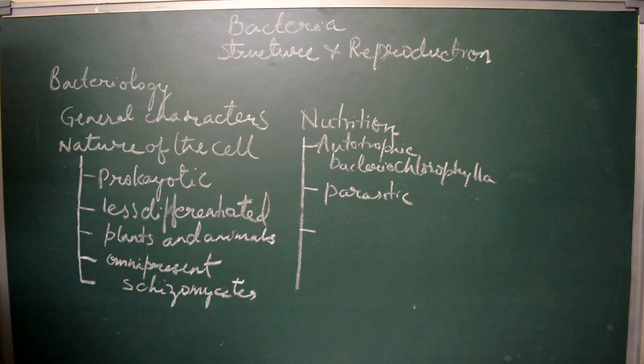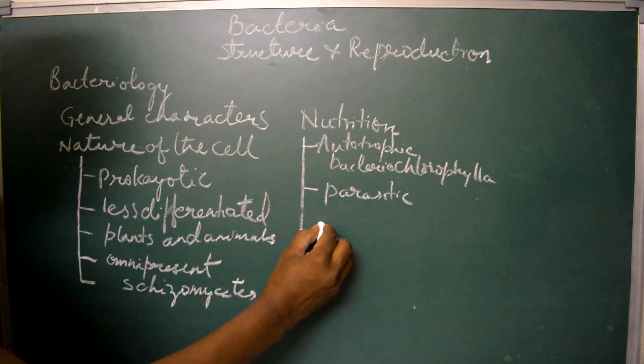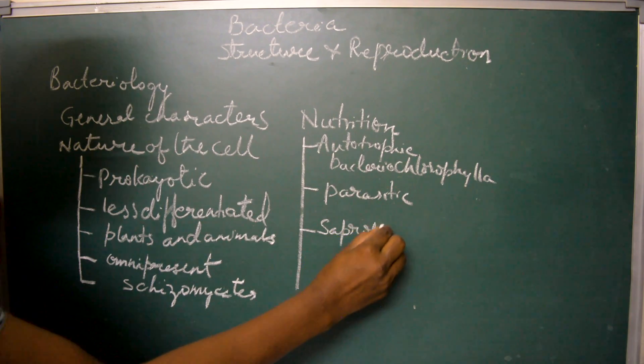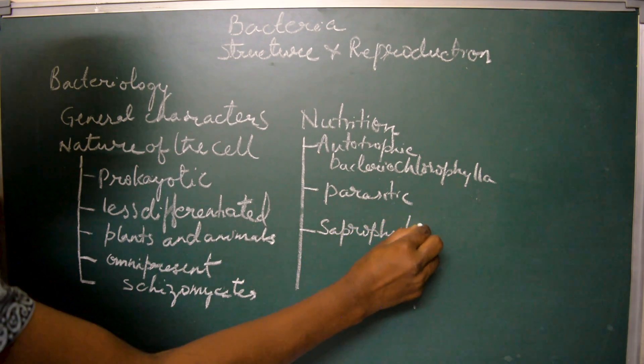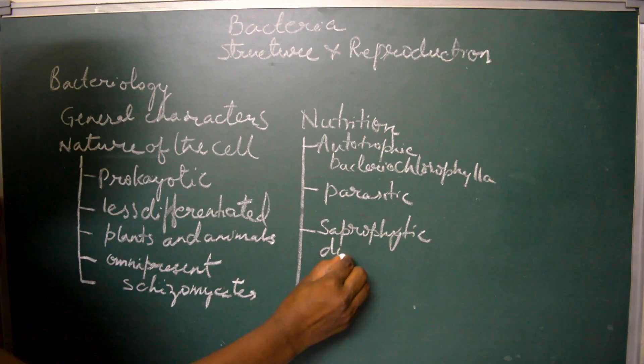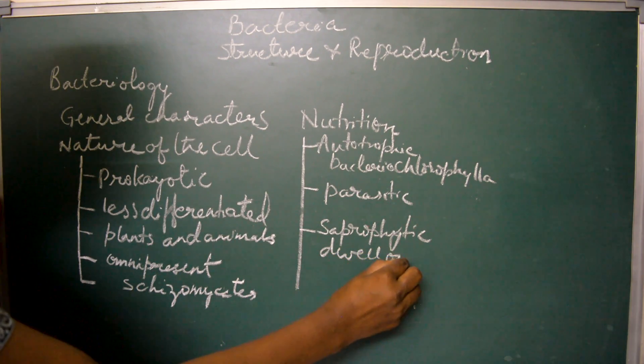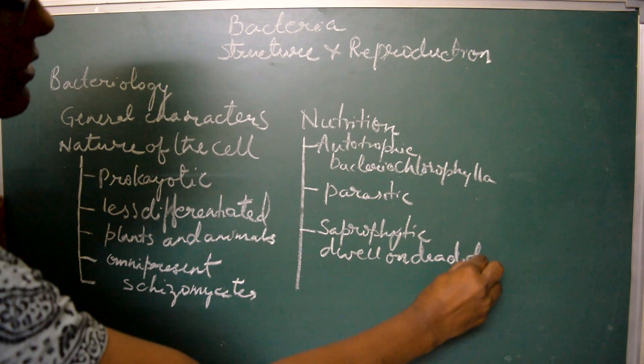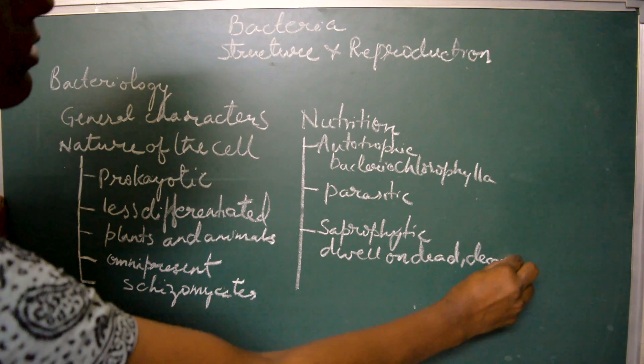There are some bacterial cells which show a saprophytic type of nutrition, that is they dwell on dead, decaying organic matter.